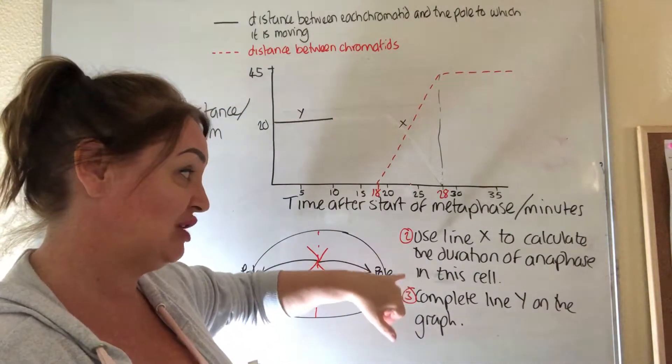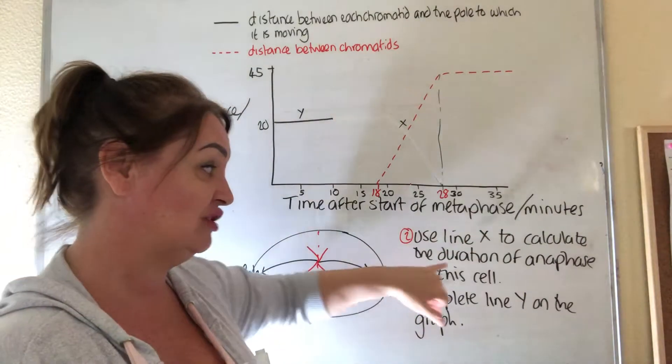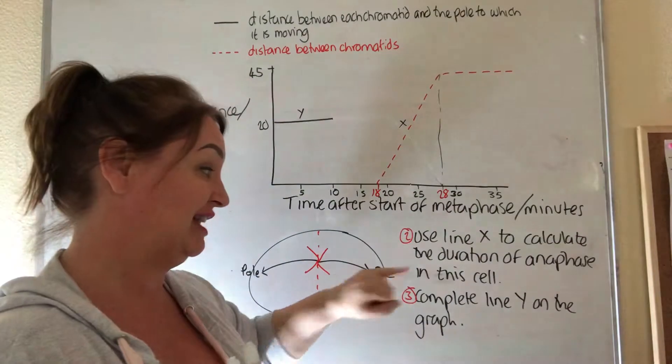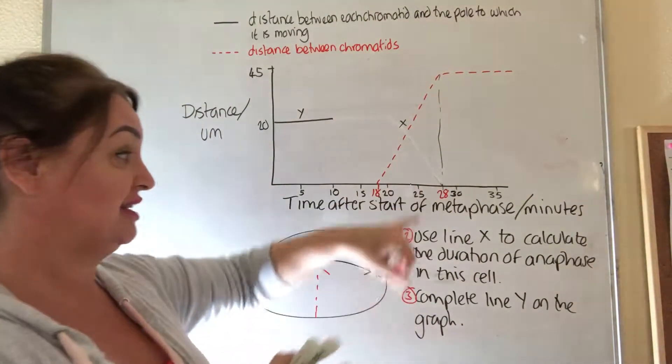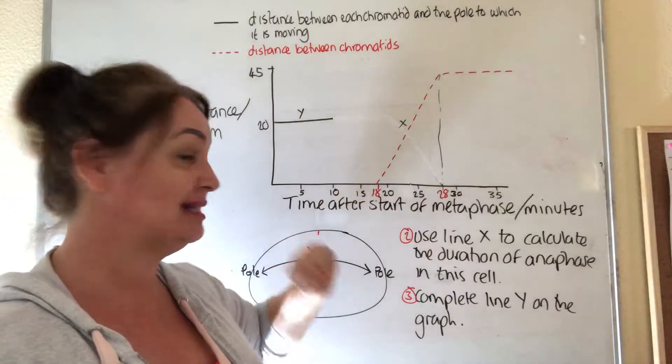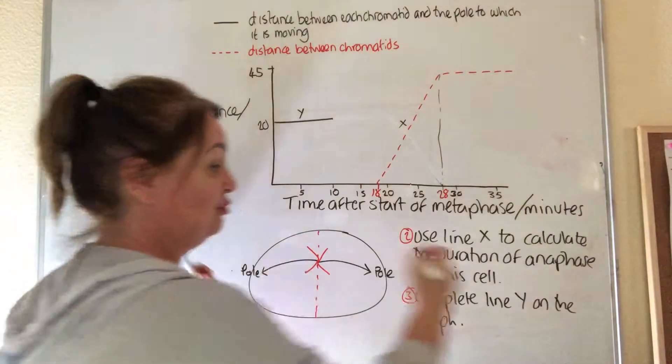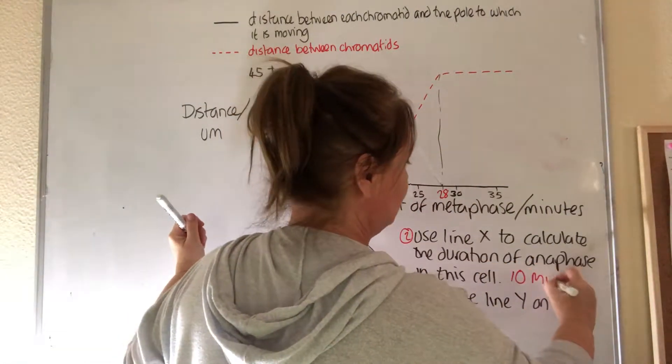And so in answer to the question, use line X to calculate the duration of anaphase in this cell. Well, to calculate it, I need to go 28 minus 18, so it would be 10 minutes.